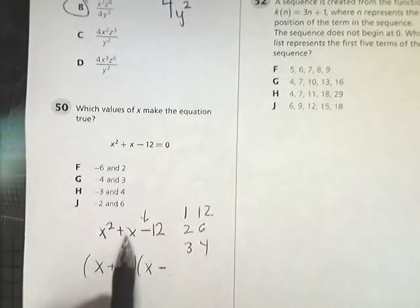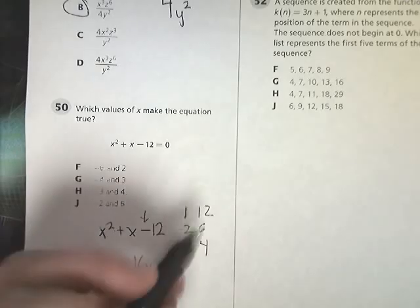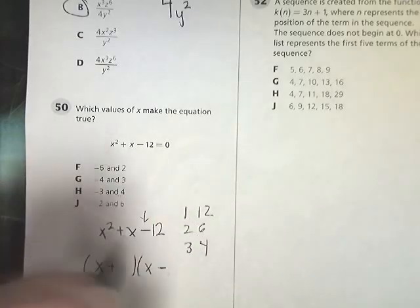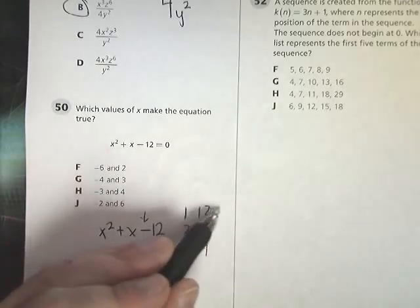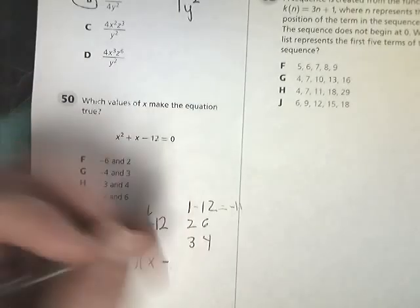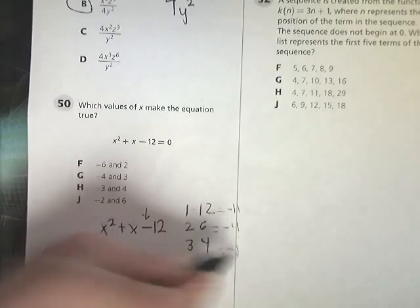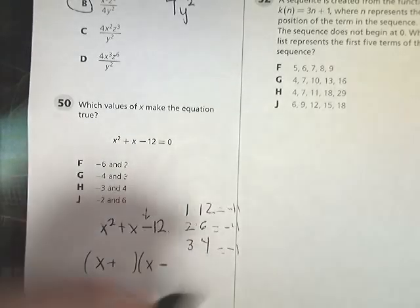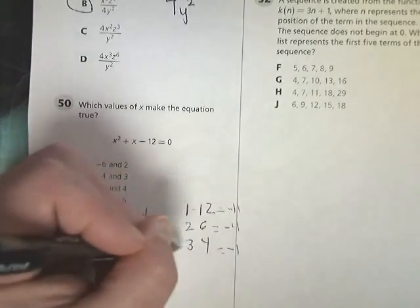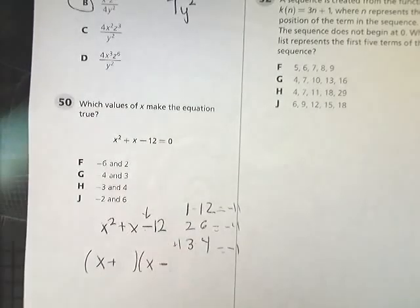I'm going to try to find this plus 1x. So what I'm going to look for is, what can I subtract to make positive 1? 1 minus 12 gives me negative 11. 2 minus 6 gives me negative 4. 3 minus 4 gives me negative 1. But if I go the opposite way, 4 minus 3 does give me that positive 1 I'm looking for.